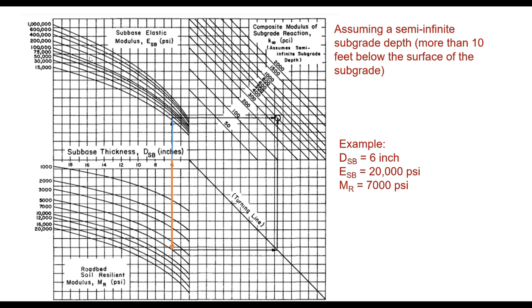These are the charts for M_R value and these are the charts for elastic modulus of subbase material. You get a point here, you get a point here. From this point you move horizontally on this turning line, and from this point you draw a line perpendicular. From this point you draw a horizontal line, and the intersecting point here will give you the composite modulus of subgrade reaction, that is k_infinite. For this example problem it is 400 psi.